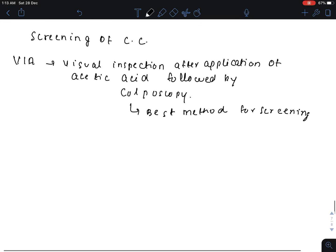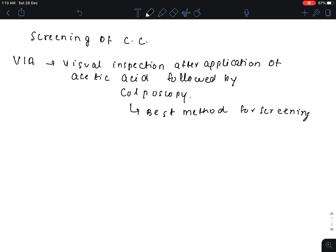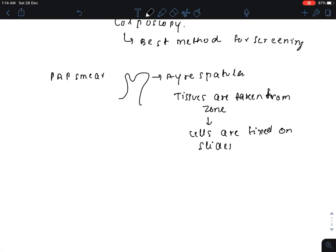It is done by pap smear using iris spatula. Tissues are taken from the transformation zone. Cells are fixed on slides for detection of squamous dysplasia.